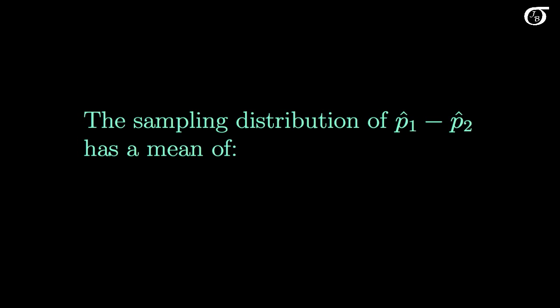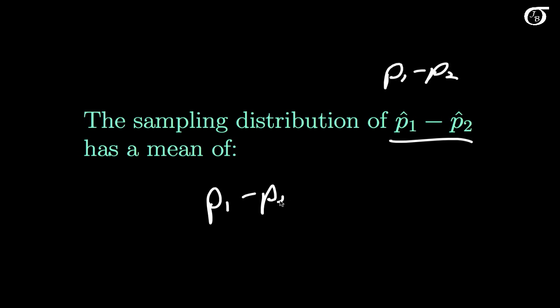To actually carry out that test we need to know something about the sampling distribution of the difference in sample proportions, because this estimates the true difference in the population proportions. The sampling distribution of the difference in sample proportions has a mean of p₁ minus p₂. So the difference in sample proportions is an unbiased estimator of the difference in population proportions.